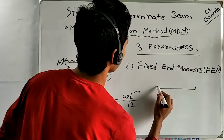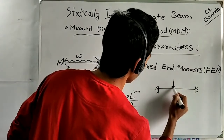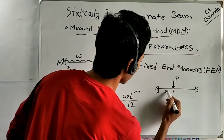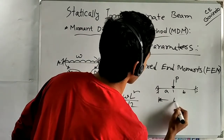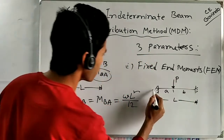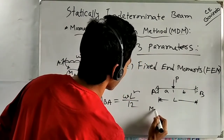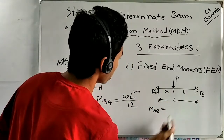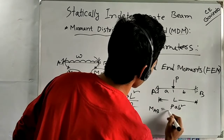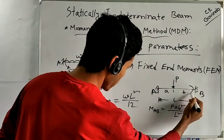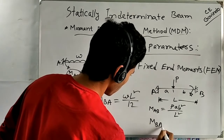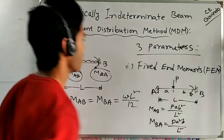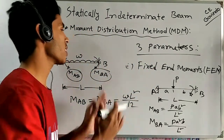Similarly, if we have a beam with a point load P, where the distance from the left end is 'a', the distance to the right end is 'b', and the total span is L, then the Fixed End Moment M-AB equals P·a·b² divided by L², and the moment at the other end M-BA equals P·a²·b divided by L².